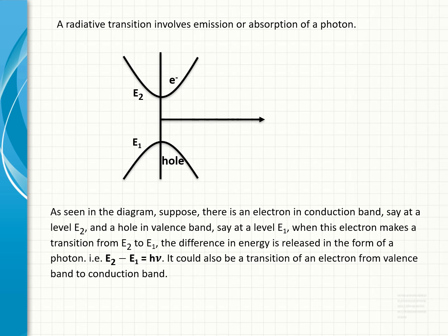As seen in the diagram, suppose there is an electron in conduction band, say at a level E2, and a hole in valence band, say at a level E1. When this electron makes a transition from E2 to E1, the difference in energy is released in the form of a photon.